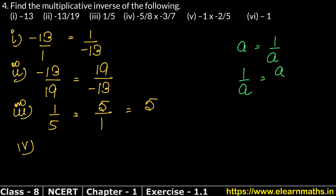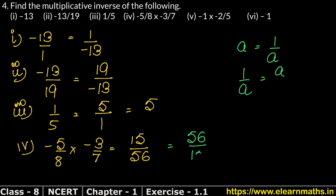The fourth part is minus 5 upon 8 into minus 3 upon 7. Let's solve it first. Minus times minus is plus, and 5 times 3 is 15 on top. There is no common factor to cancel. So 8 times 7 is 56 on the bottom. The result is 15 upon 56. Now the multiplicative inverse: the denominator comes to the numerator and the numerator goes to the denominator. So 56 upon 15 is the answer.